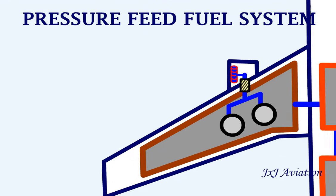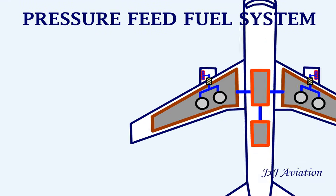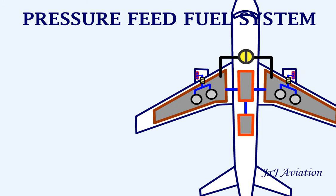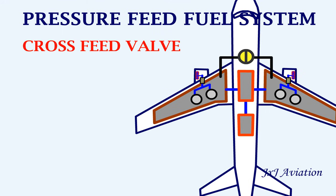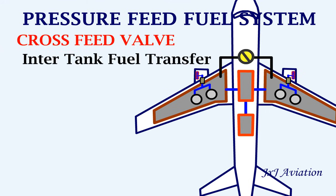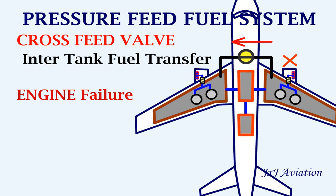The wing tanks are interconnected and the flow is controlled by a cross-feed valve. This valve allows direct intertank fuel transfer, which is essential in case of an engine failure. So if there is a right engine failure, fuel from the right tank is transferred to the left tank via the cross-feed valve.